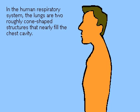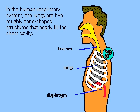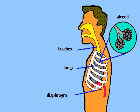The human respiratory system exchanges oxygen from the air for carbon dioxide produced by the body. The center of the system is the lungs, two elastic cone-shaped sacs that nearly fill the chest cavity. The actual mechanism where the gas exchange occurs is the alveoli, a tiny cluster of air sacs.